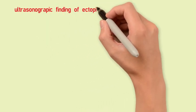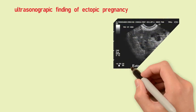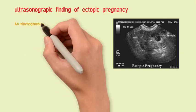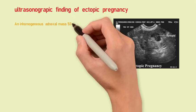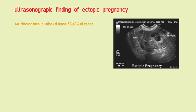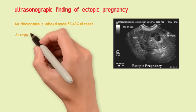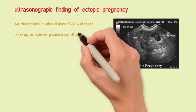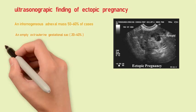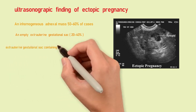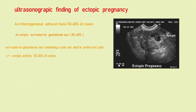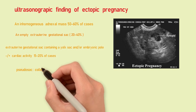Transvaginal sonography is the diagnostic tool of choice for tubal ectopic pregnancy. The following ultrasound criteria may be used for diagnosis: a heterogeneous mass, present in 50% of cases; presence of an empty extra-uterine gestational sac, present in about 40% of cases; and presence of an extra-uterine gestational sac with or without yolk sac and fetal pole, present in 10 to 20% of cases.